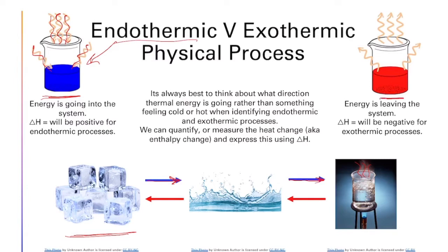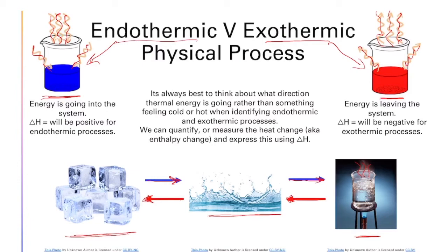For an exothermic process — shown here with this red beaker — energy is leaving the system, exiting it, and the arrows point outward. If I start with boiling water and take energy out of the system by turning the flame off, it would stop boiling and eventually cool down to room temperature. If I continued to pull energy out by putting that water in a freezer, I would get ice again. So this exothermic process actually creates a colder substance because we're pulling thermal energy out of it.